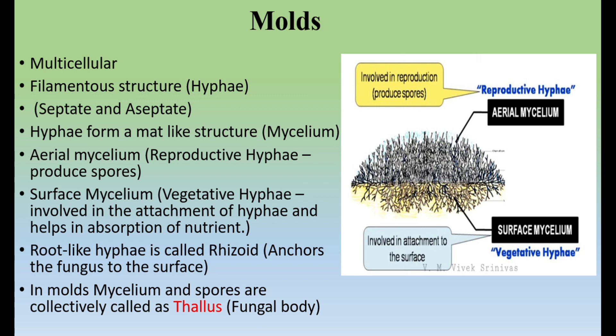Molds are multicellular and have a filamentous structure through hyphae. Hyphae may be septate or aseptate, and they may form a mat-like structure known as mycelium. There are two types of mycelium: aerial mycelium and surface mycelium. Surface mycelium is attached to the surface and is involved in anchoring the fungi; it is also known as vegetative hyphae. Aerial mycelium is the reproductive hyphae, because the reproductive structures - conidiophores and sporangiophores - are attached to it and it produces spores.